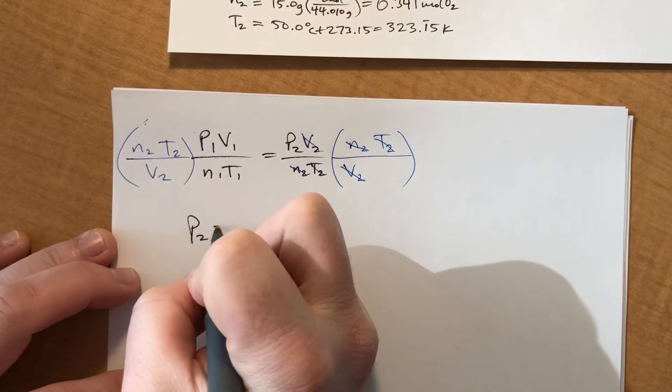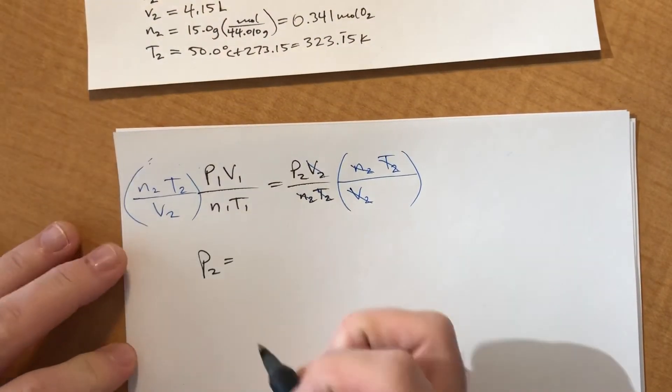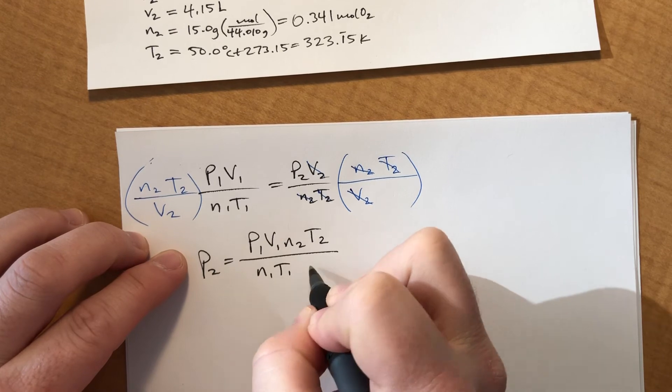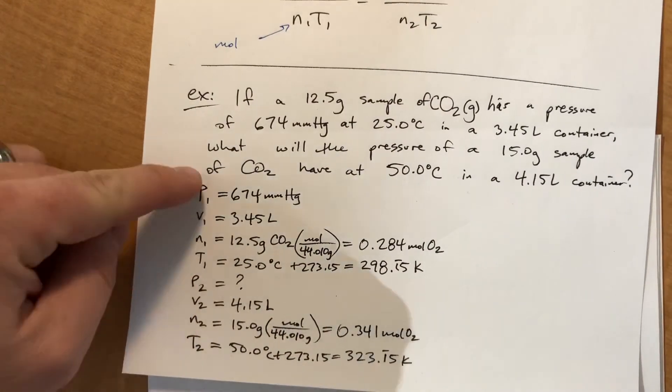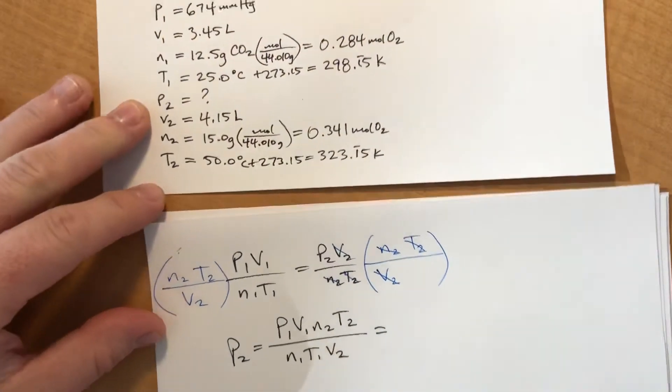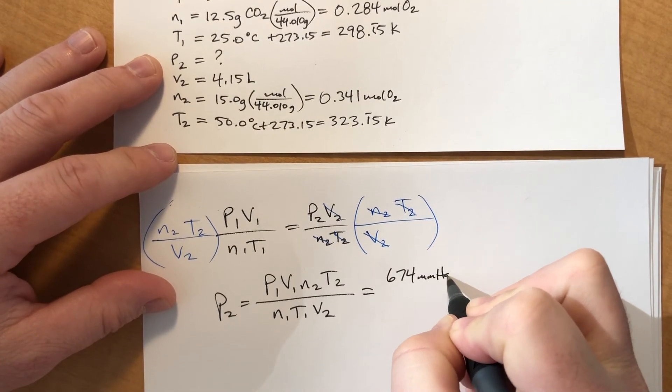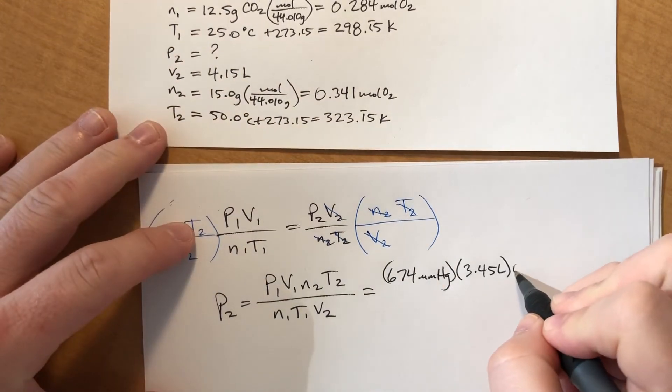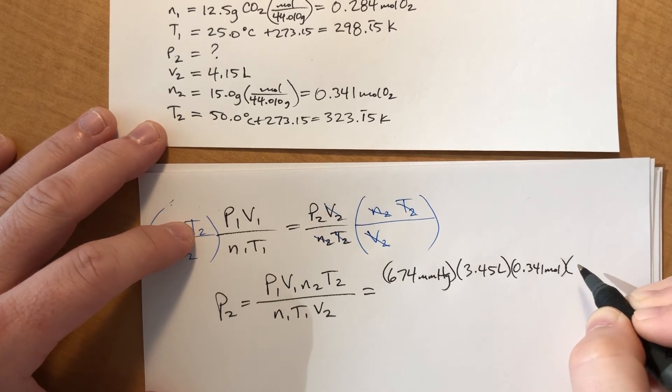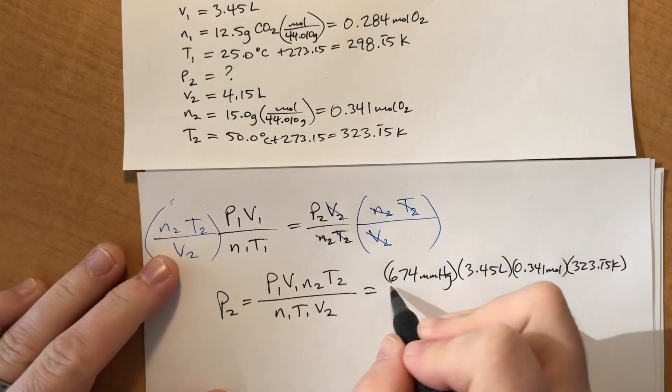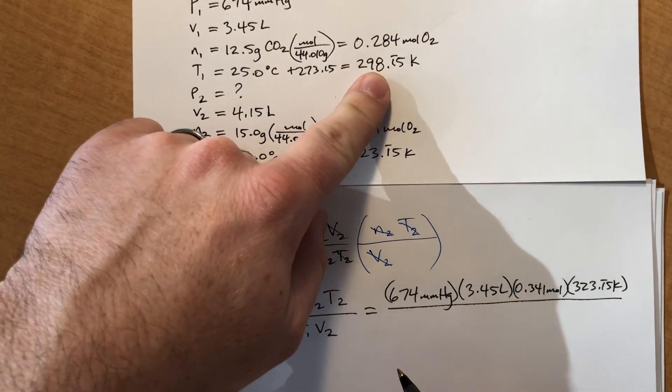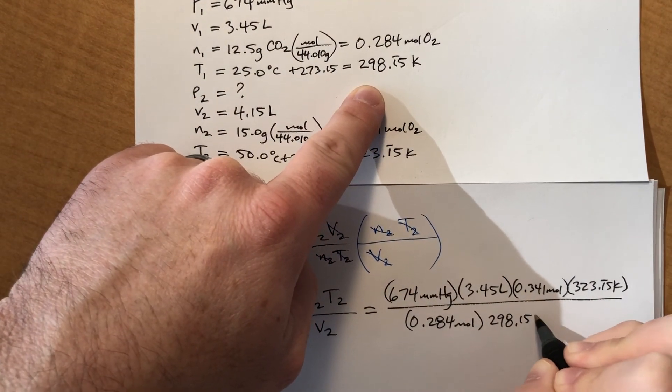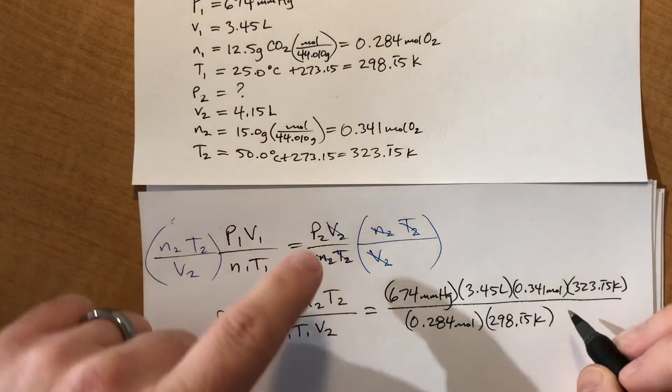And what we have is that P2, everything else is cancelled out, equals all of this stuff, which is a lot. Most of these problems don't have every variable, but I wanted to see what it would look like if it did. So, P2 equals P1 and V1 are on top, and N2 and T2 are on top, and in the bottom we have N1, T1, and V2. Well, we literally just figured all those things out, so let's plug them in. So, P1 is 674 millimeters of mercury, V1 was 3.45 liters, N2 is 0.341 moles, T2 is 323.15 Kelvin, N1 was 0.284, T1 is 298.15, and V2 is 4.15 liters.